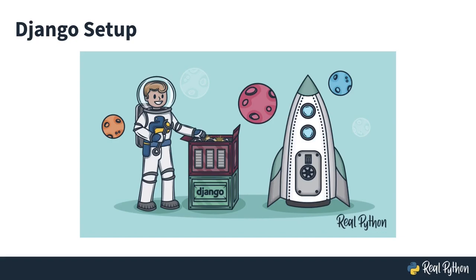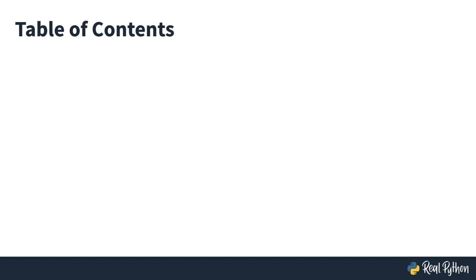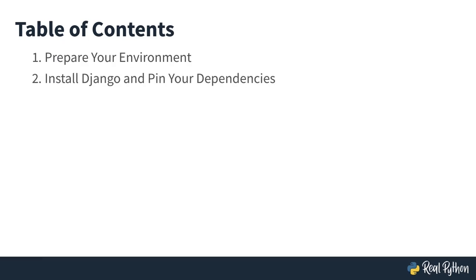Welcome to this Real Python course on Django setup. In this short course, I'm going to walk you through all the necessary steps that you need to do every time before starting a new Django project. You will learn about preparing your environment, setting up a virtual environment and activating it, then installing Django and pinning your dependencies, and finally setting up a Django project. We're also going to talk about the difference between a Django project and a Django app.